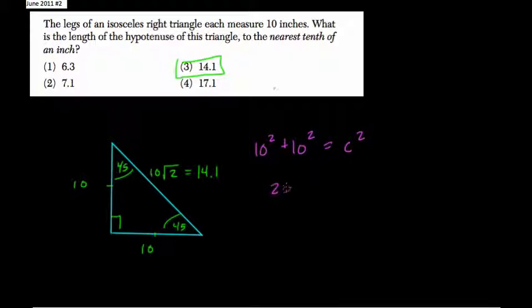10 squared plus 10 squared is 200, equals c squared. We want to know what does c equal, so square root of 200.